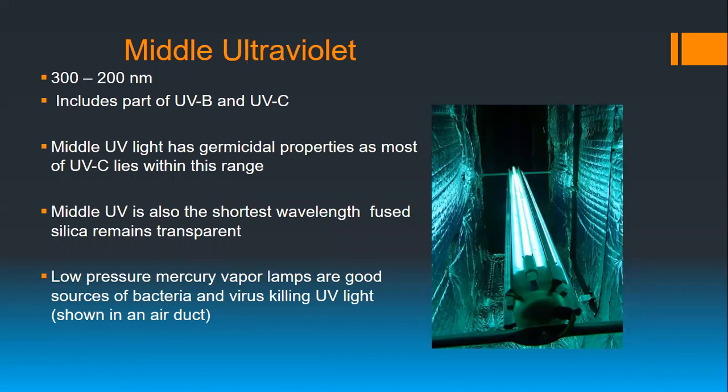Here is one of those mercury UV lamps with a quartz envelope. A typical fluorescent lamp has phosphor on the inside of a glass envelope that doesn't allow UV-C through. These lamps use a special quartz envelope and are specifically designed to produce ultraviolet light — created by simply passing electricity through mercury vapor.